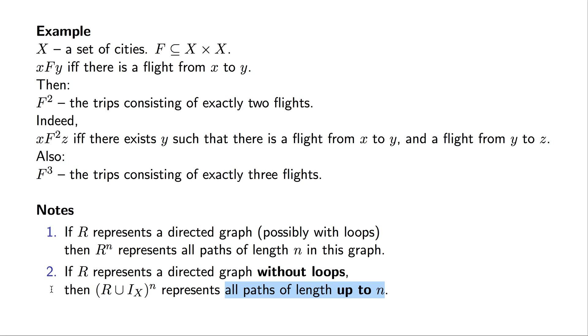Why can we claim that item 2 holds? This is because for paths shorter than n, we can loop from the node to itself a desired number of times, and only after that traverse other links, other edges in the graph.